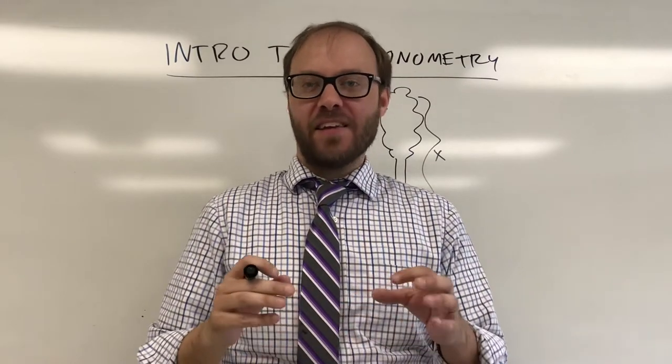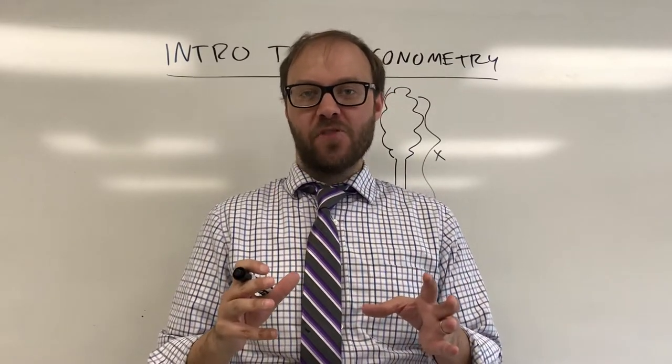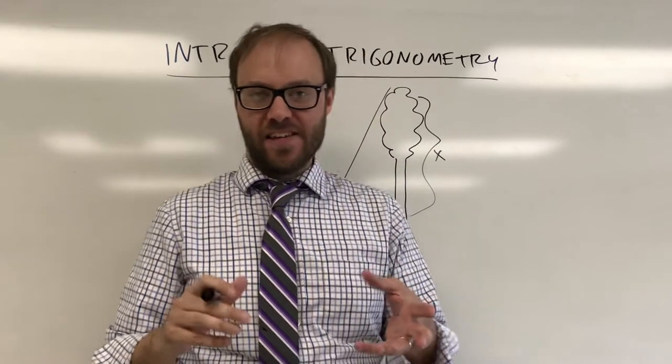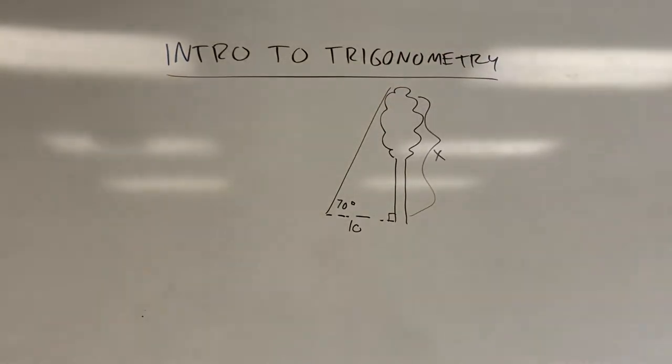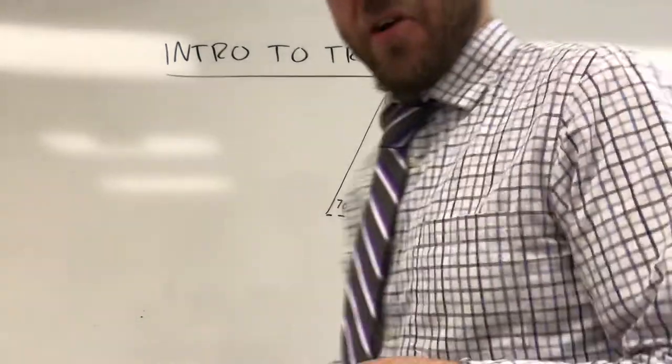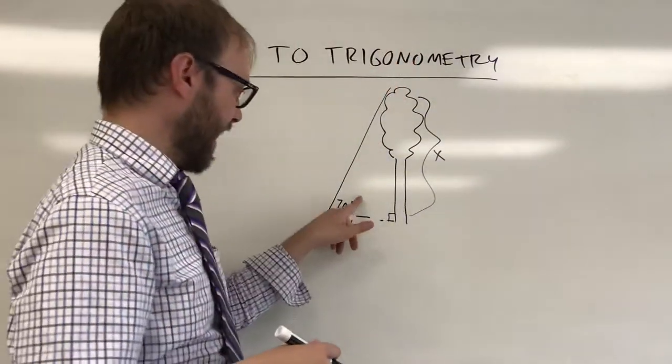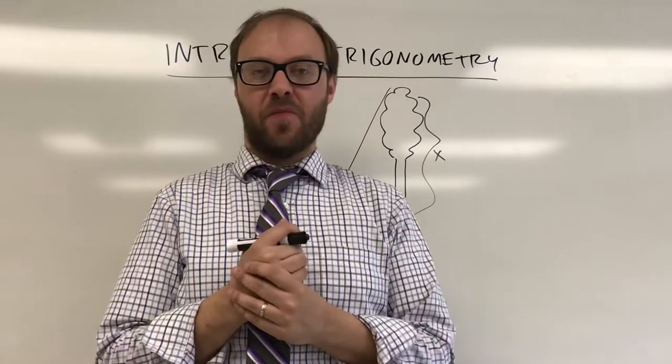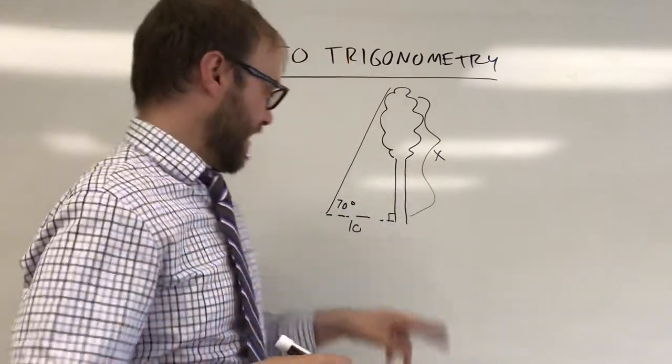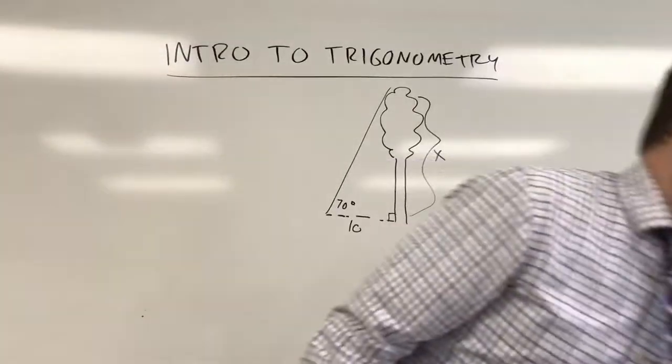So we've already done a little bit of work with the relationship between angle measures and side lengths of triangles. Specifically 30, 60, 90, and 45, 45, 90 triangles. If this had been a 60 degree angle, you could do this problem no issue. But it's a 70 degree angle. And so the game changes a little bit here.